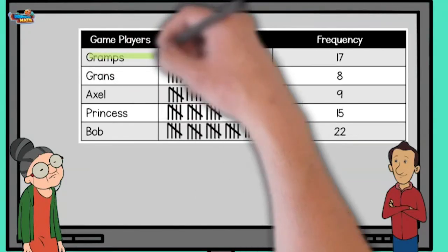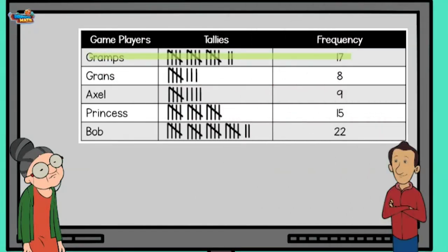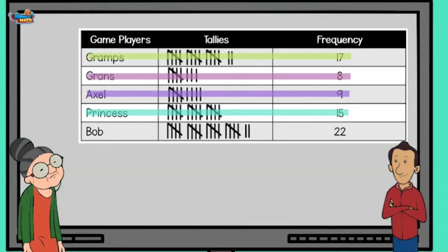So, Gramps won 17 times, I won 8 times, Axel 9 times, Princess 15, and Sweet Bob won 22 times. He always has had a knack for games. He is also always the scorekeeper. Hmm.